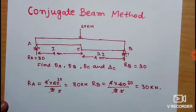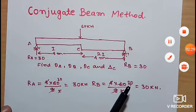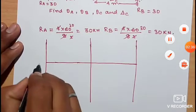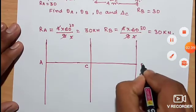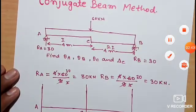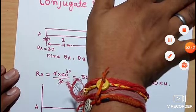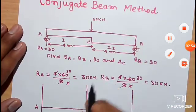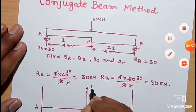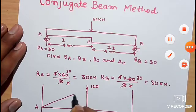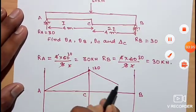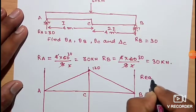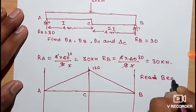Next step is to find the real beam's bending moment diagram. This is the real beam with points A, C, and B. We take the moment at C: 30 into 4 equals 120. So 120 is the moment at C, giving a triangular BMD that is linear from A to C and from C to B.